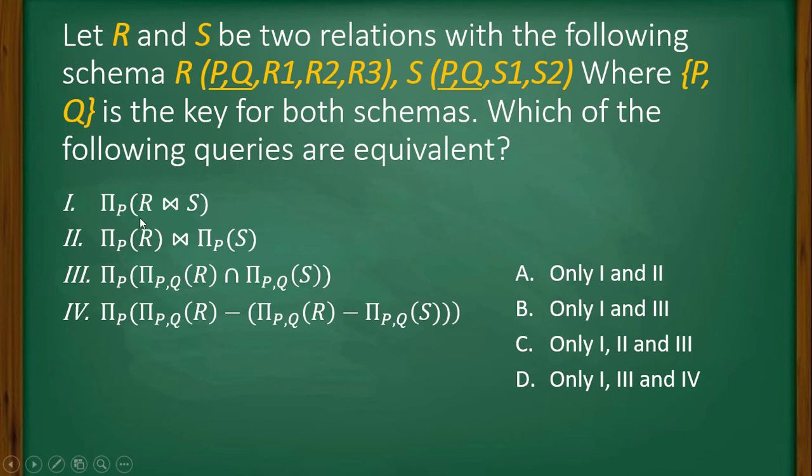Doing a natural join over these two relations, or doing intersection between this projection and this projection based on their primary keys, the results are going to be the same.